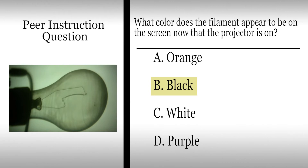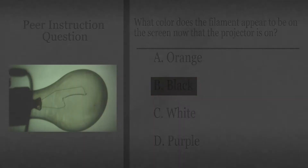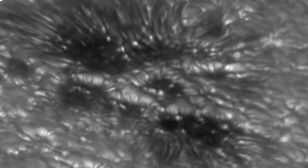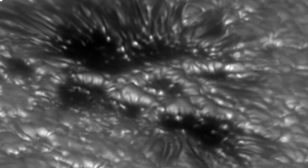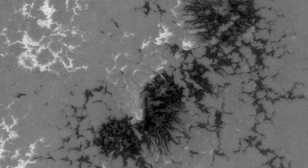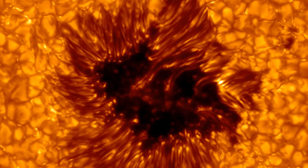Note that this situation is analogous to sunspots and the surrounding photosphere of the sun. A sunspot has a temperature of about 4,500 degrees Kelvin and would appear orange if it could be viewed in isolation. But when viewed surrounded by the 6,000 degree Kelvin yellow photosphere, sunspots appear dark by comparison.